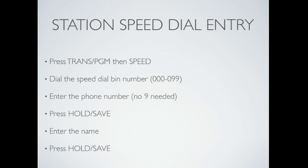To enter a station speed dial, press the Transprogram button, then Speed. Dial the speed dial bin number, which starts at 000 and goes to 099. You'll then enter the phone number — you do not need to dial 9. Press Hold/Save, enter the name, and then press Hold/Save again.